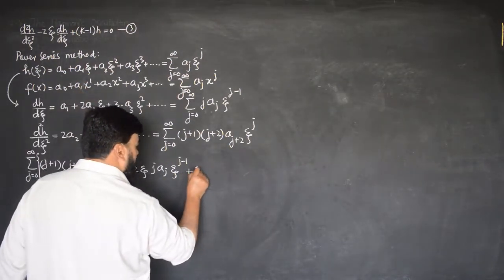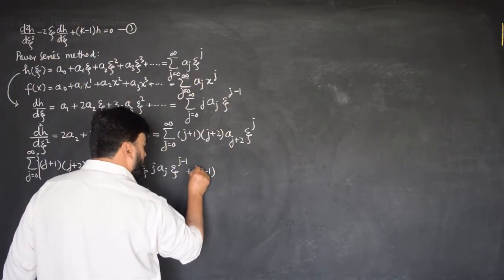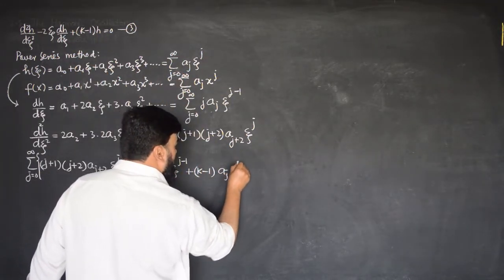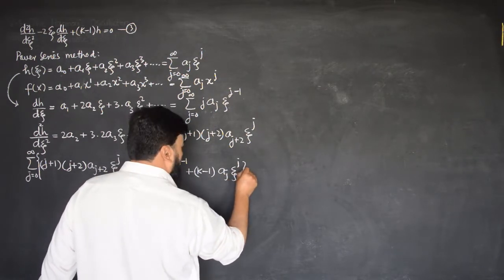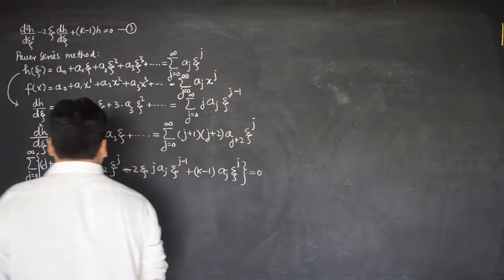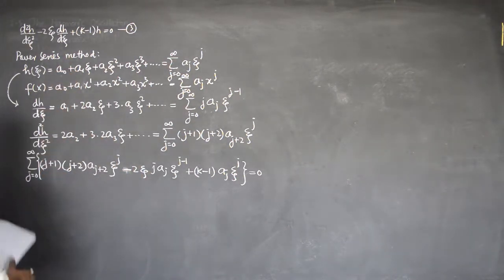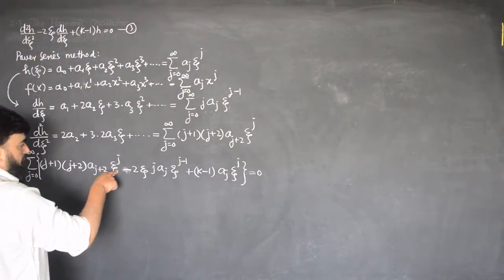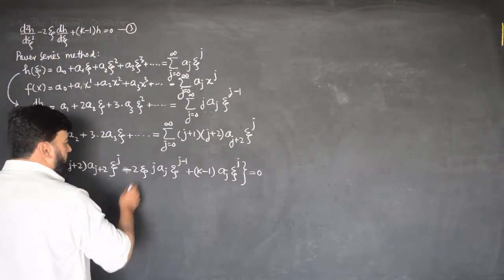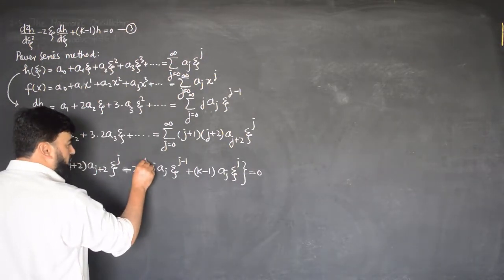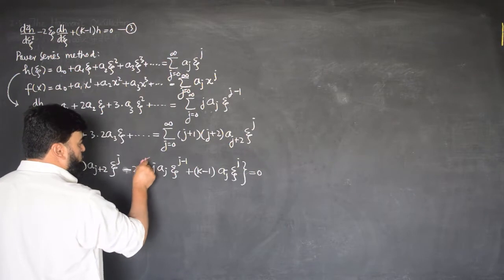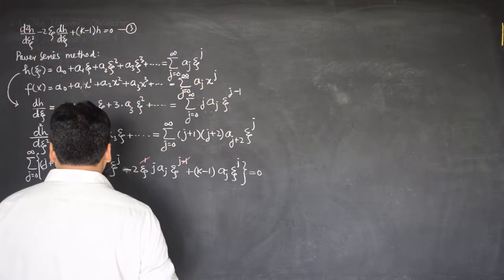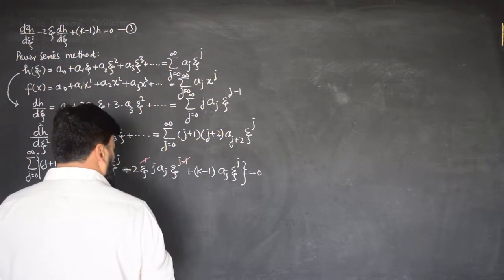We have the term plus k minus 1, and for h, I can write a_j ξ to the power j, and this is equal to 0. We have written our differential equation in this form, and now here, ξ has power 1 here and power j minus 1 here, so 1 will cancel with 1 and ξ^j will remain. We can take ξ^j as common.